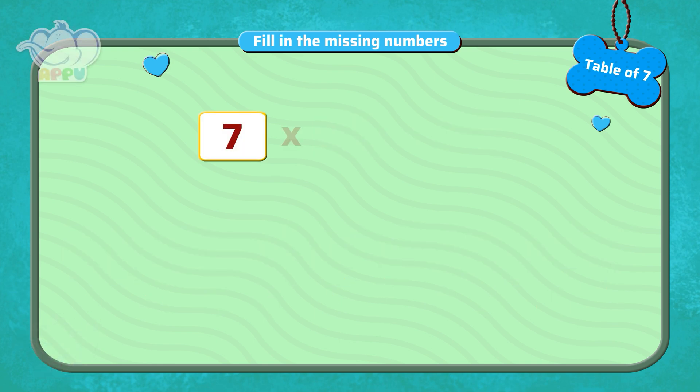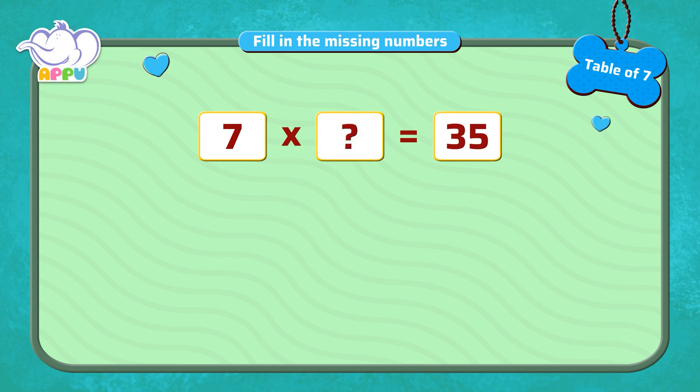7 multiplied by a number is 35. What is the missing number?